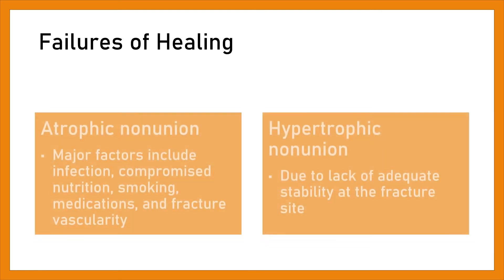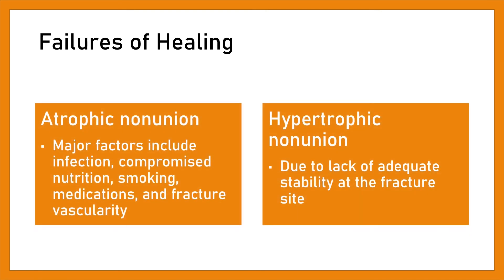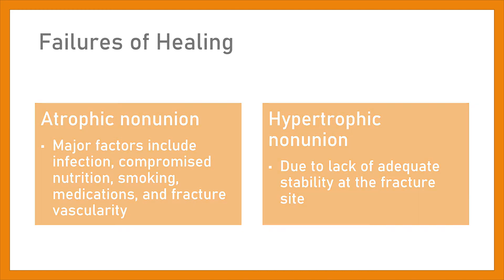Failures of healing: There are two types. First, atrophic non-union — major factors include infection, compromised nutrition, smoking, medications, and fractured muscularity. Second, hypertrophic non-union — due to lack of adequate stability at the fracture site.